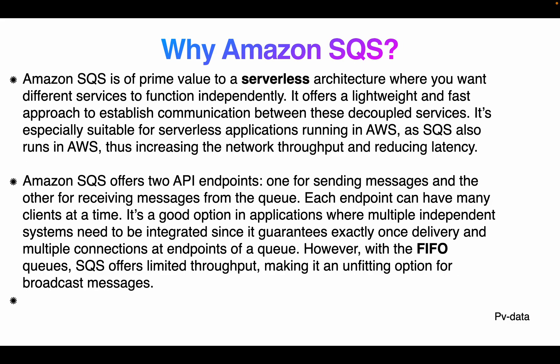Amazon SQS is a prime choice for serverless architectures where you want different services to function independently. It offers a lightweight and fast approach to establish communication between decoupled services, and is especially suitable for serverless applications running on AWS. SQS offers two API endpoints: one for sending messages and one for receiving messages from the queue, with each endpoint supporting many clients at a time.